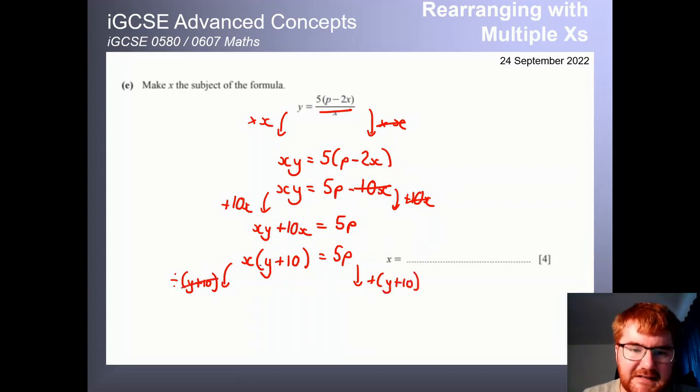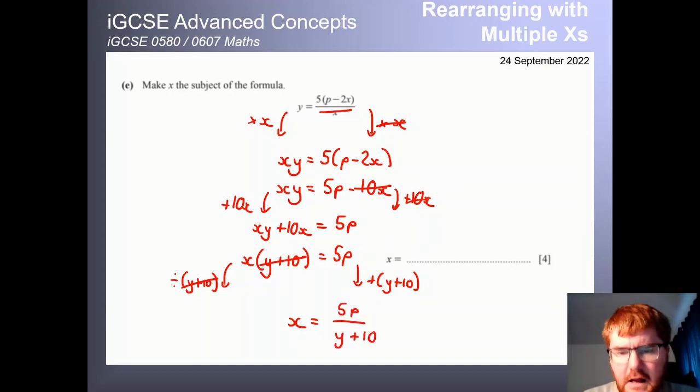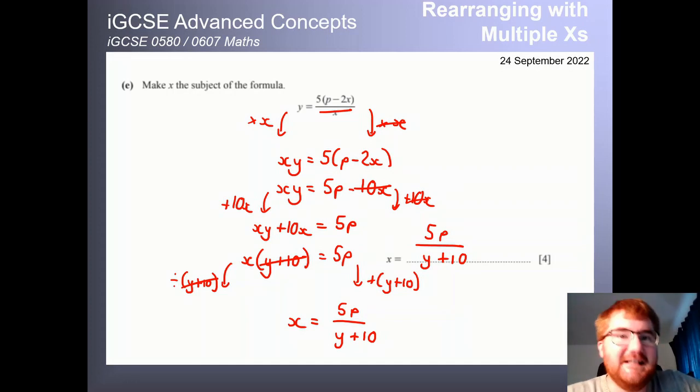So divide by y plus 10 on both sides. If we do that, this cancels. Fantastic. We get what we want. x equals. And then we just get 5p over y plus 10. Notice we can't cancel further here because we have a plus in the denominator. And so we don't have a common factor to divide through. So our final answer for all those lovely four marks, enjoy them when you get them in the exam, is 5p over y plus 10.